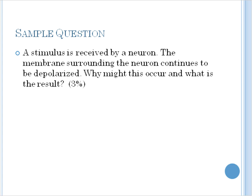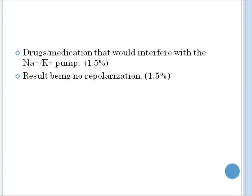A constructive response question related to this topic. A stimulus is received by a neuron. The membrane surrounding the neuron continues to be depolarized. Why might this occur? What is the result for a value of 3%? The answer is you may see drugs make the case that could interfere with the sodium potassium pump for 1.5%. State that the result is no repolarization, another 1.5%. That was the accepted answer as provided for this exam.